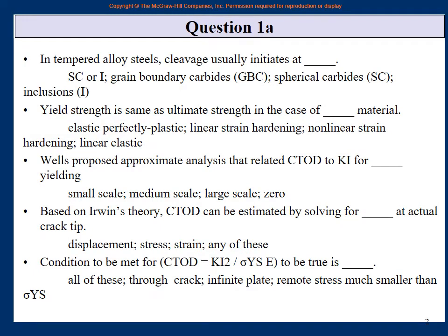So let us start. We initially have some multiple choice questions, then we will move on to other types. There are of course a few selected ones; there could be many others in the course. Let's start with the first one: In tempered alloy steels, cleavage usually initiates at what? Grain boundary carbides (GBC), spherical carbides (SC), inclusions (I). If you remember your mechanisms chapter, Chapter 5, then for tempered alloy steels which have gone through the tempering heat treatment, cleavage usually initiates at spherical carbides and at inclusions.